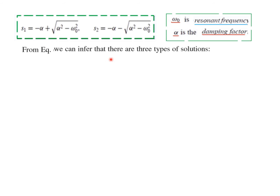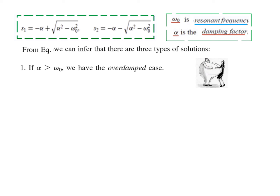From the roots we can infer three types of solutions. The first is when α > ω₀, called the overdamped case — damping has control over the oscillation. Because α is greater than ω₀, the term under the radical is positive, so the roots are distinct, unequal, and real.